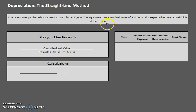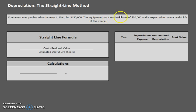Before we jump right in let's talk about the basics. Whenever we purchase these fixed assets we always value them at cost. So here we paid $450,000 for the equipment, so that is the amount that we are going to record the equipment at. Another very important term is residual value. The residual value refers to the amount that we believe we can sell this equipment for at the end of its useful life.